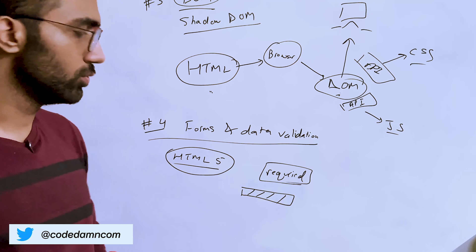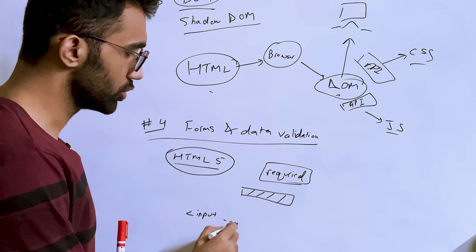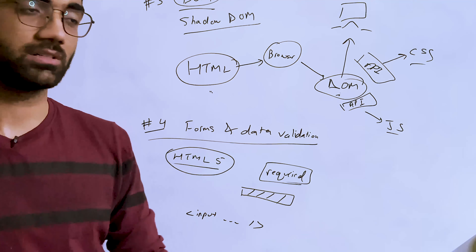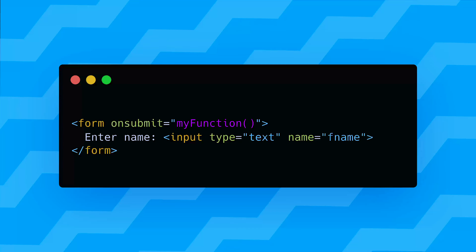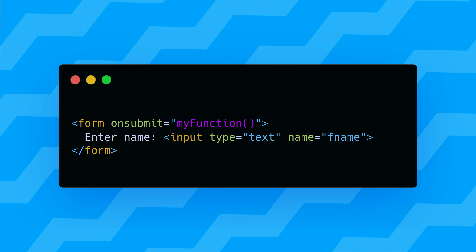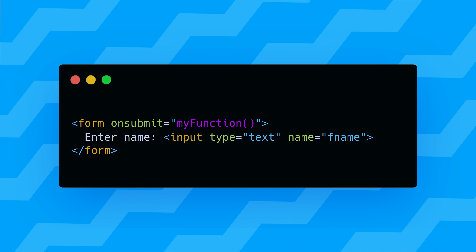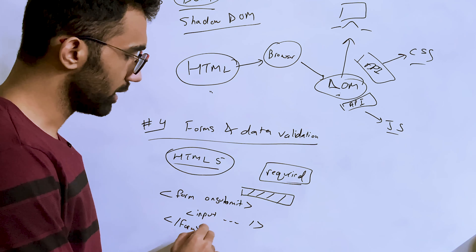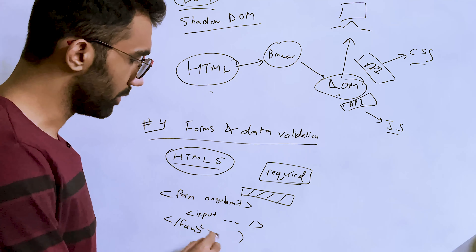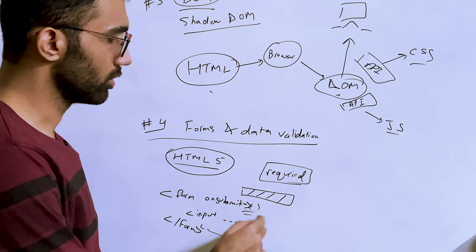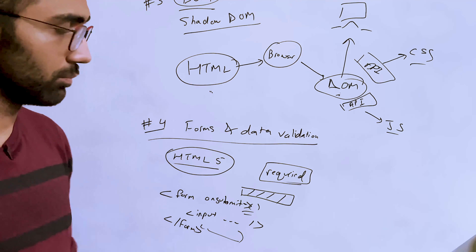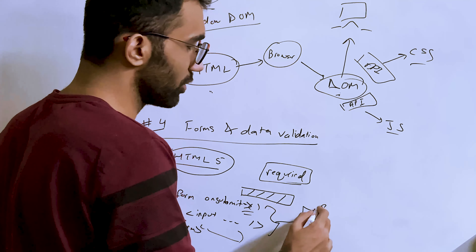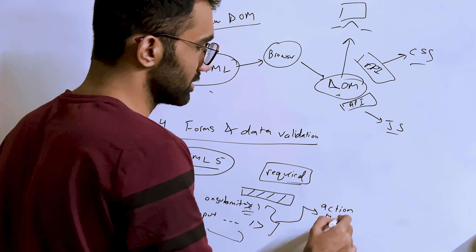I've seen so many people write JavaScript to make an input field do something when Enter is pressed — using onkeydown and checking keyCode. You just have to wrap the input inside a form with onsubmit and you're done. Whenever someone types in that input field and hits Enter, if there's a button — or even if there isn't — that onsubmit function will be called.